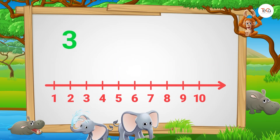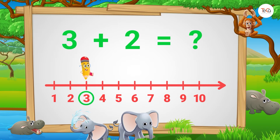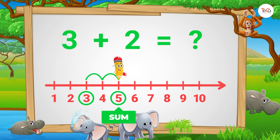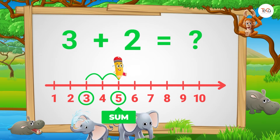To find 3 plus 2, we start from number 3. Then jump two numbers to the right. Then see the number where we stop to find the sum. Here we stop at number 5.